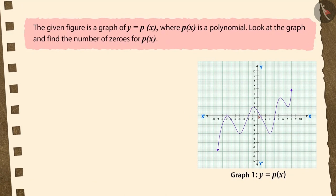Given figure is the graph of y equals px. Look at the graph and find the number of zeros of the polynomial px. Options: 3, 1, 5, or 4. To solve this question, pause the video and then match your answer.